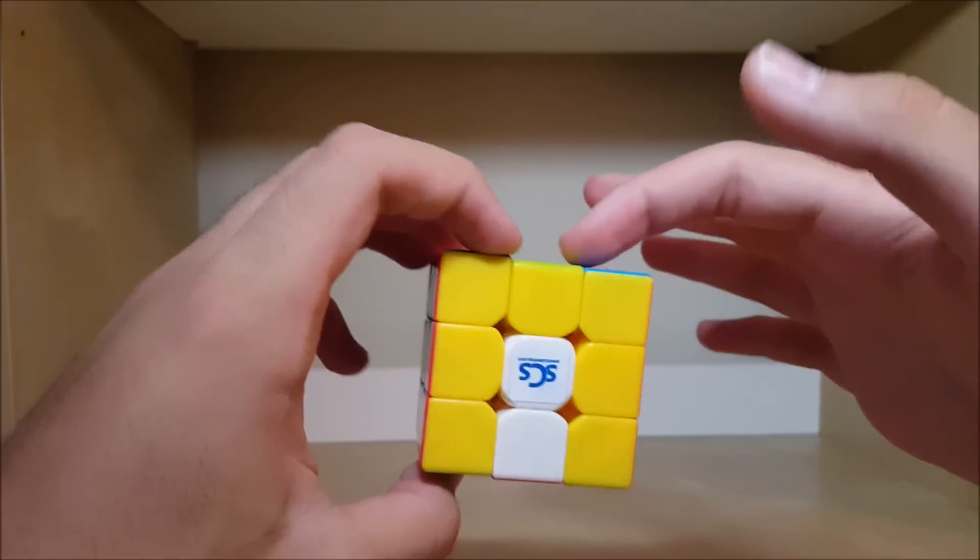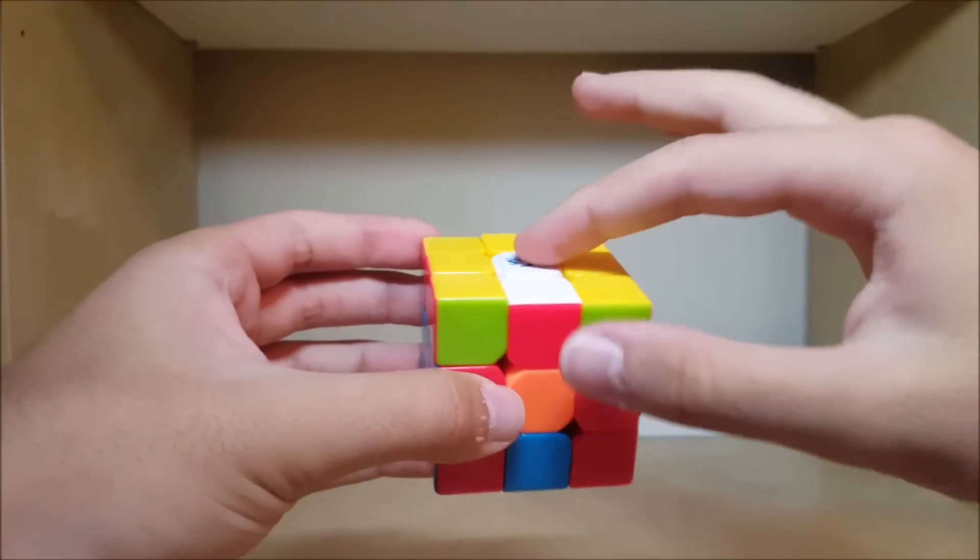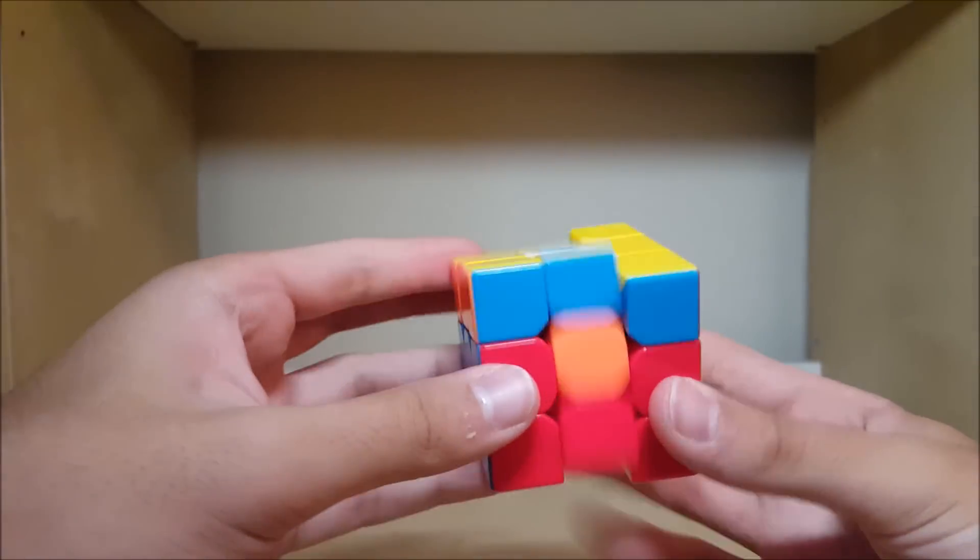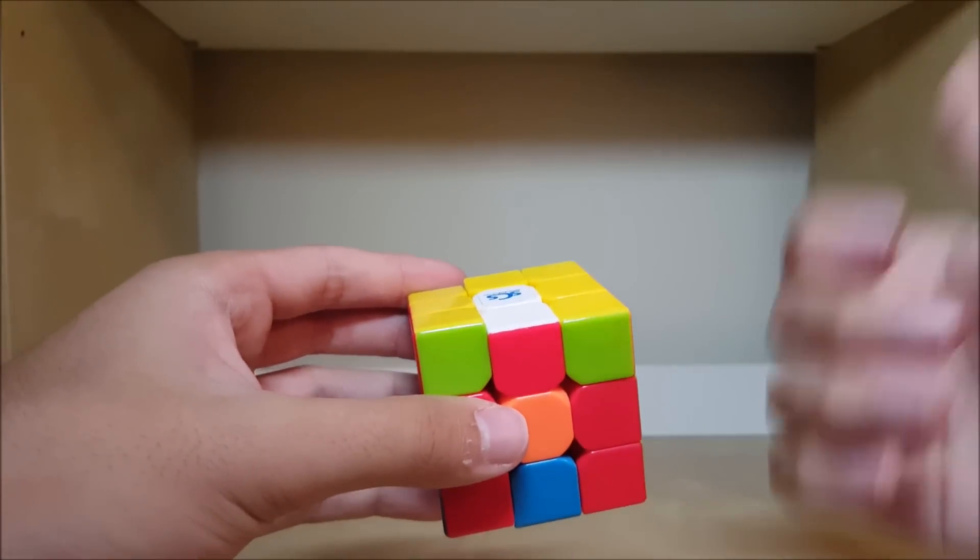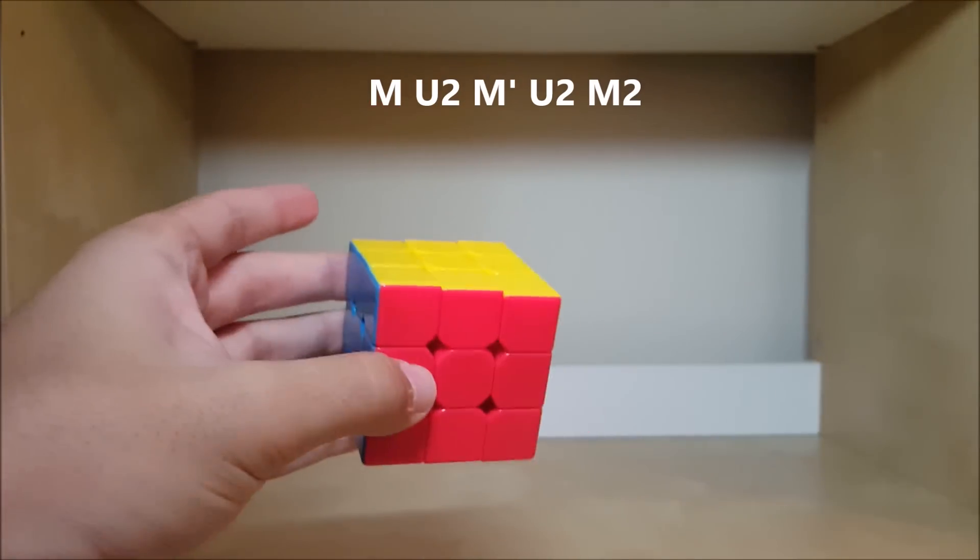Now we have the next case where this is in the back and this is in the front. Here once again we see this type of thing and these are opposite. Usually we do M' U2 M that gives dots. So you do the exact opposite of that. That's just M U2 M' and then there's another skip.